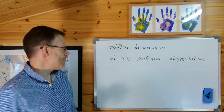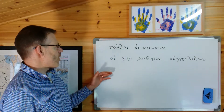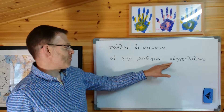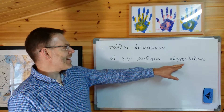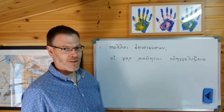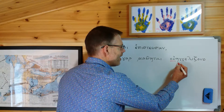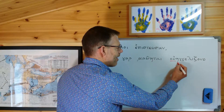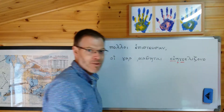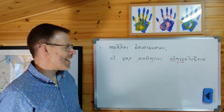Let's read example number one: polloi episteusan hoi gar mathetai euengelizonto. A few pronunciation points here: there's a diphthong, a double gamma pronounced as 'ng' - euengelizonto.